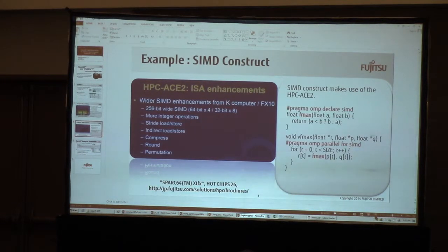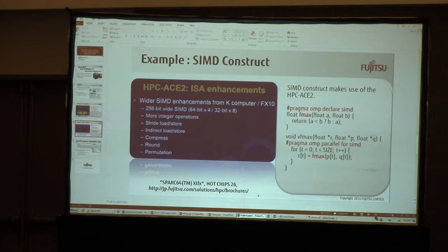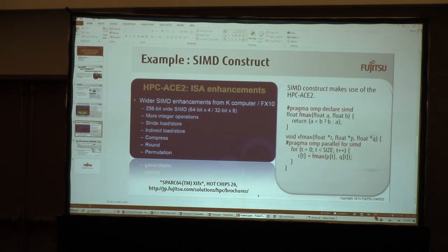Here is a very simple example of CMG constructs. The SPARC64 XIfx CPU has an ISA called HPC-ACE2. HPC-ACE2 has 256-bit wide SIMD operations, some additional integer operations, CMG instructions, and other useful instructions. OpenMP can exploit this CPU performance, and on the right you can see a simple example of an OpenMP directive.